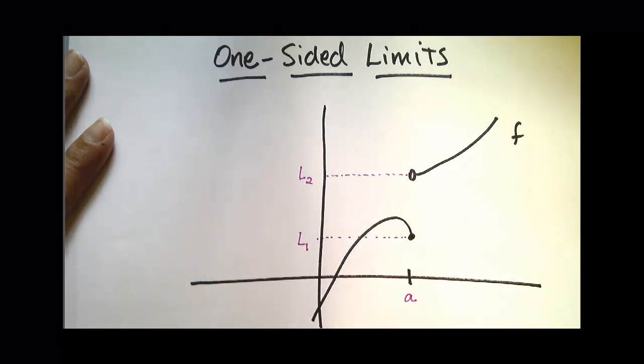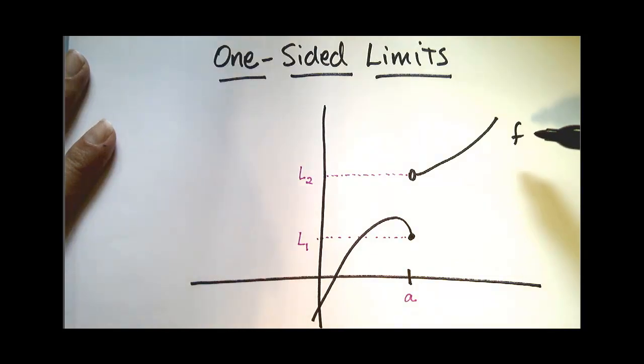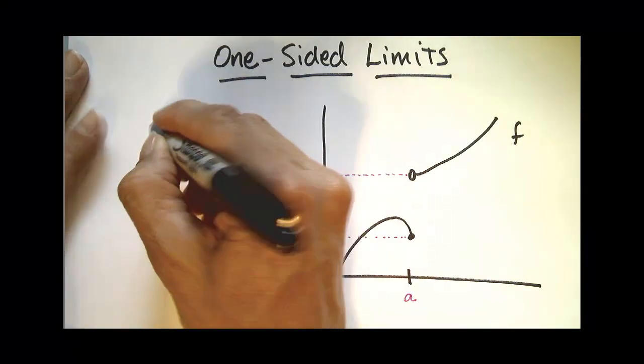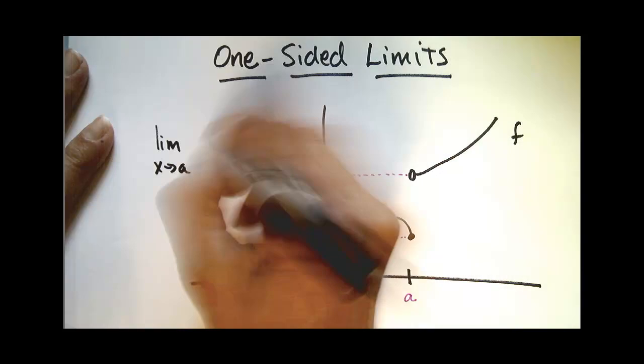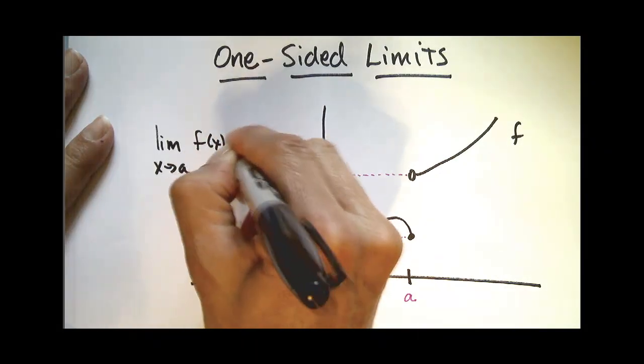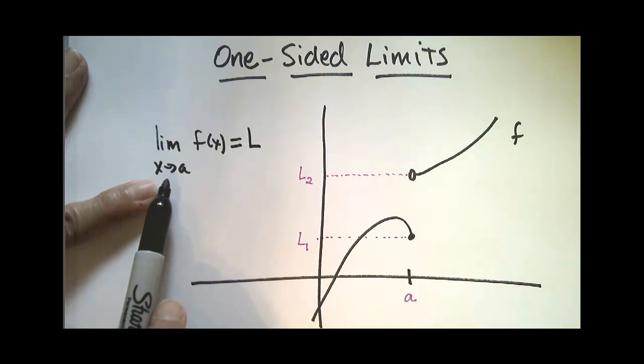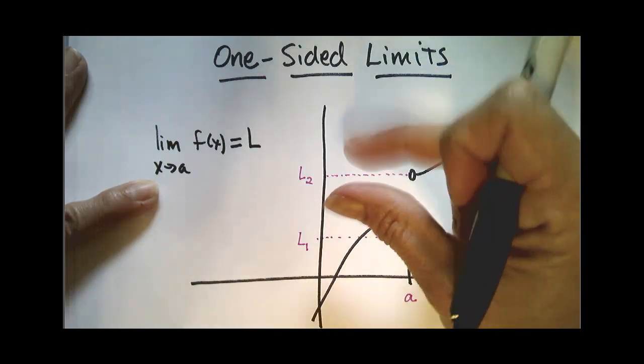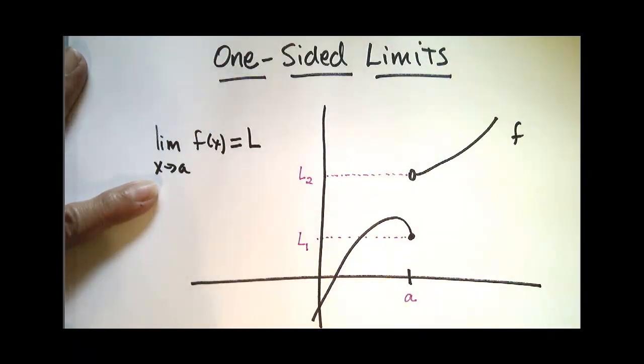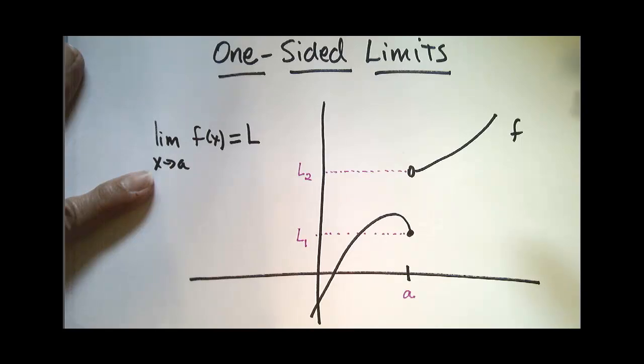Remember in the last video when we were defining what it meant for the limit of the function f to exist at a? We said that the limit as x approaches a of f(x) equals L if as we approach a from either side, our y values tend towards L. Well clearly in this picture, this is not true.